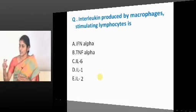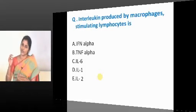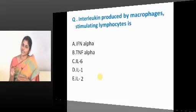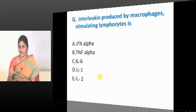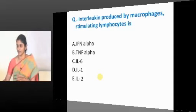In inflammasome-associated diseases, when inflammation gets activated, IL-1 gets released, causing continuous inflammation. Diseases like atherosclerosis, rheumatoid arthritis, gout, and familial Mediterranean fever all come under inflammasome-associated disorders, and all are mediated by IL-1.